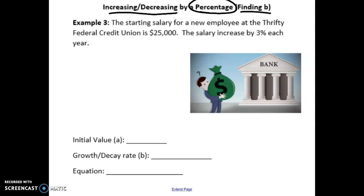So let's read through the problem first. The starting salary for a new employee at the Thrifty Federal Credit Union is $25,000. That's his starting salary. So that should tell you right off the bat, that is our A value. The salary increases by 3% each year.